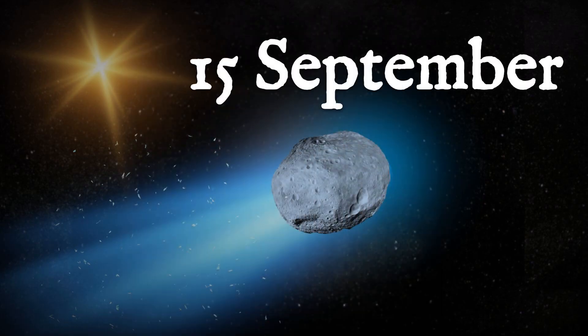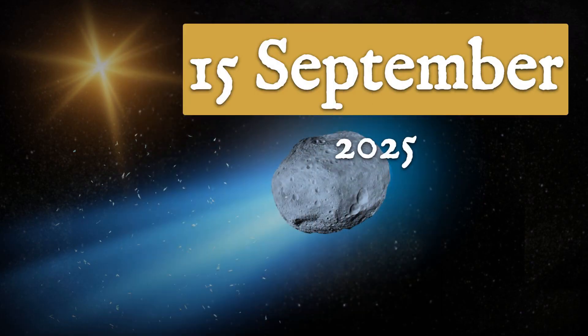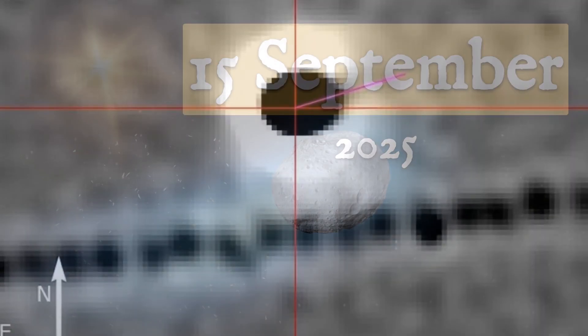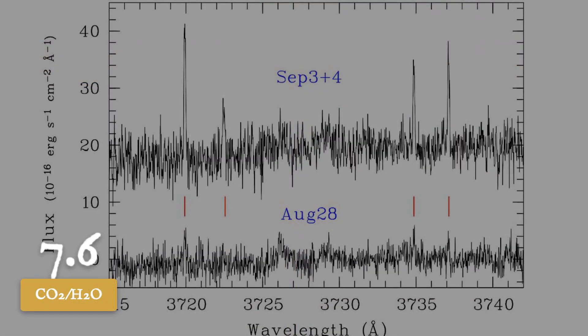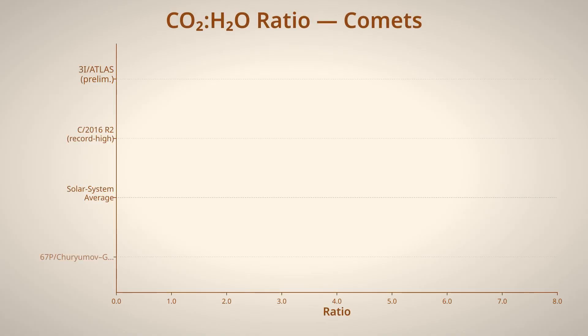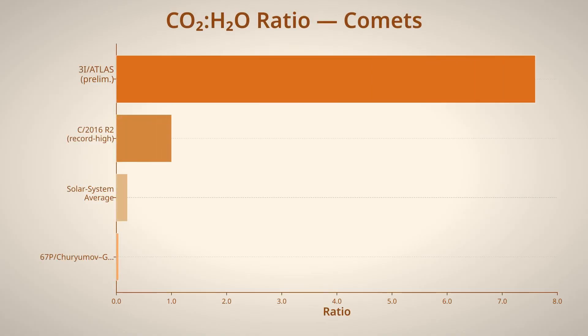On September 15th, the dust tail extended over 100,000 kilometers, now fully anti-solar, while a faint sunward feature lingered close to the nucleus. Spectral data from this period pointed to a carbon dioxide-to-water ratio near 7.6, far exceeding any solar system comet, though official confirmation remains pending.